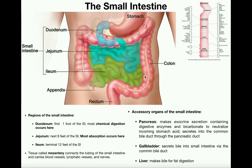So those are the three regions of the small intestine: the duodenum, the jejunum, and the ileum. The ileum of the small intestine is going to converge with the large intestine — specifically it merges with the cecum of the large intestine, passing through something called the ileocecal valve. We'll cover that in the large intestine video.